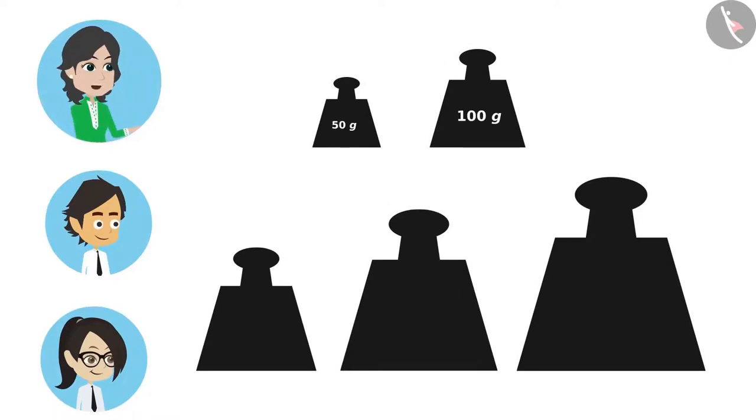Weights are iron pieces of different grams which are made by taking the accurate measure. Weights come in different measures of 50 grams, 100 grams, 250 grams, 500 grams, 1000 grams, etc.